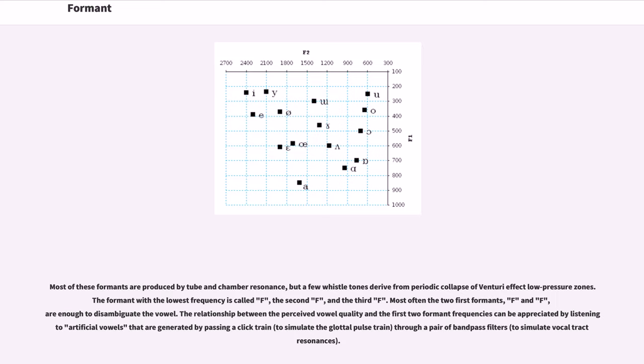Most of these formants are produced by tube and chamber resonance, but a few whistle tones derive from periodic collapse of venturi effect low pressure zones. The formant with the lowest frequency is called F1, the second F2, and the third F3.